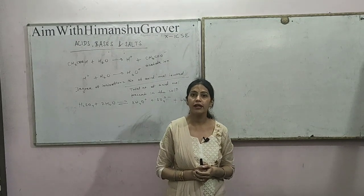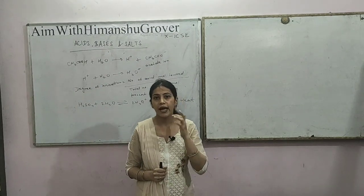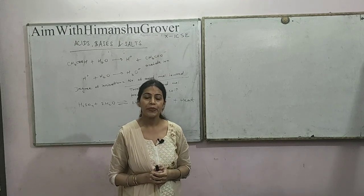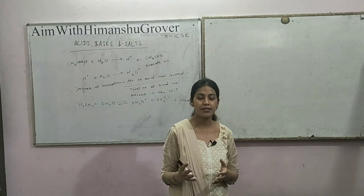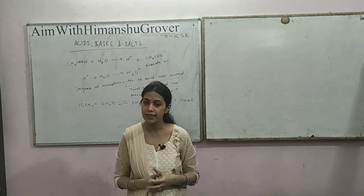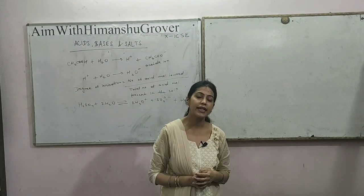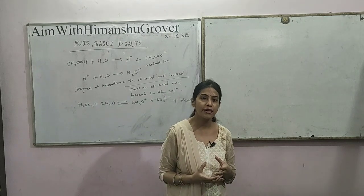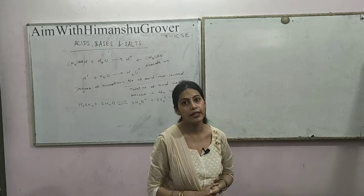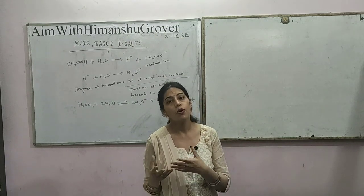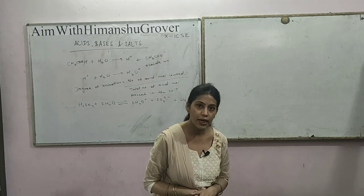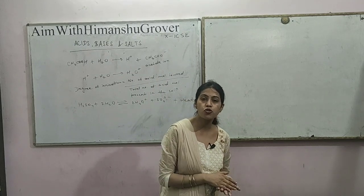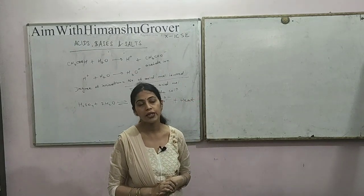Thus, dilution of a concentrated acid is always carried out by adding acid into water, and not water into acid. When we dilute an acid, the hydrogen ion concentration per unit volume is reduced. Thus, the strength of an acid also decreases by diluting it. That means concentrated HCl or H₂SO₄ is stronger than dilute HCl or dilute H₂SO₄.